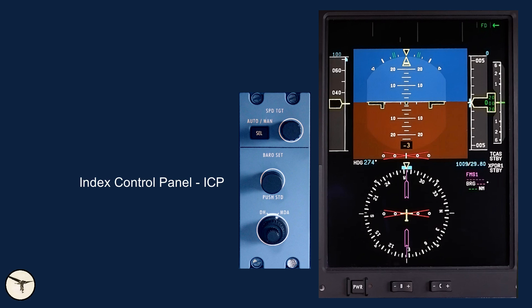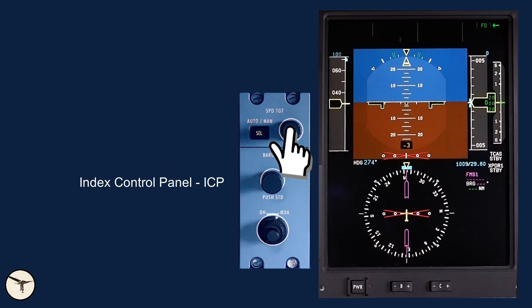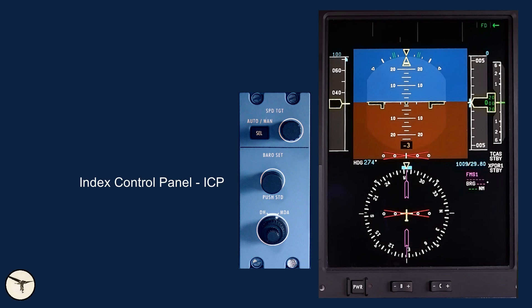This is the Index Control Panel. On the top are controls for the speed target. When the number is cyan color, the target speed and associated speed bug is set by the pilot by rotating this knob. Cyan color means manual mode. After starting the engines, we push the SEL button and activate the auto mode, and the target speed and bug change to magenta. The target speed is then calculated by the flight management system FMS.